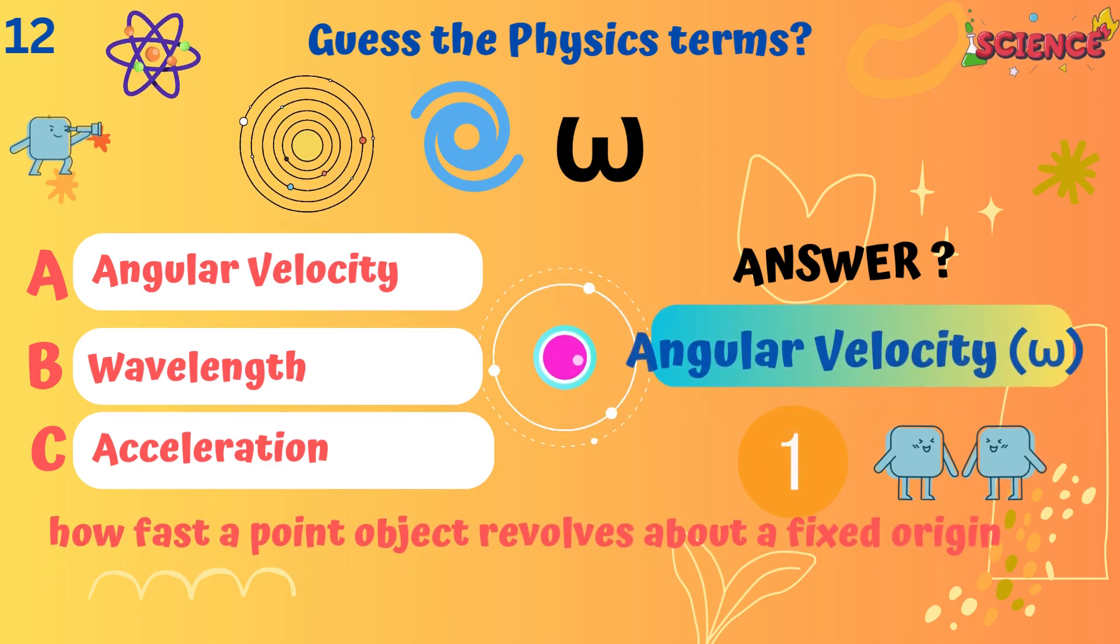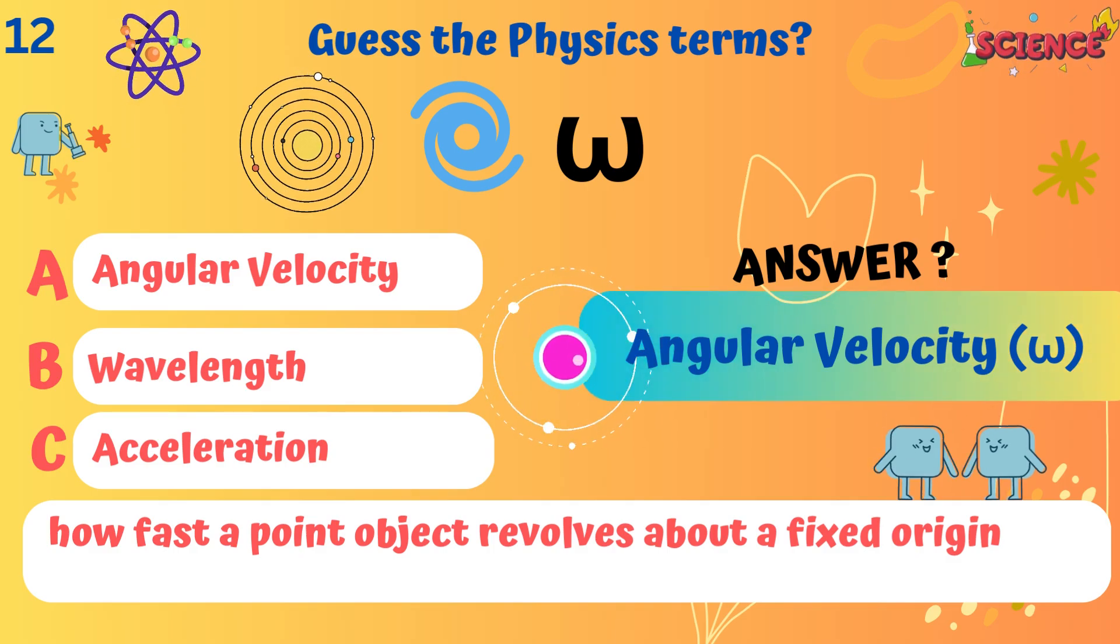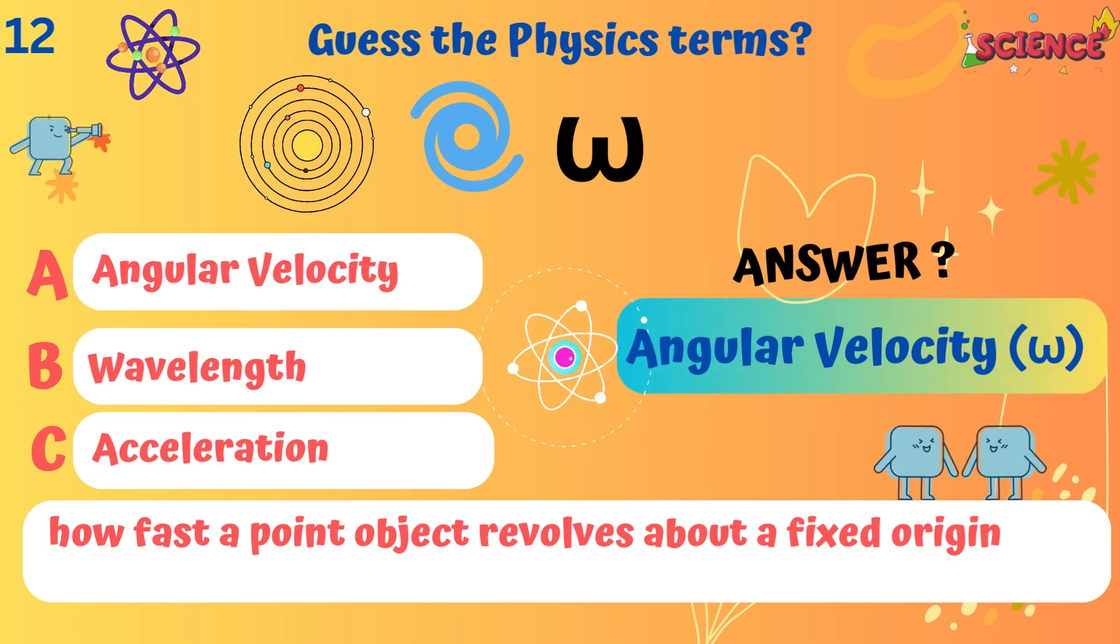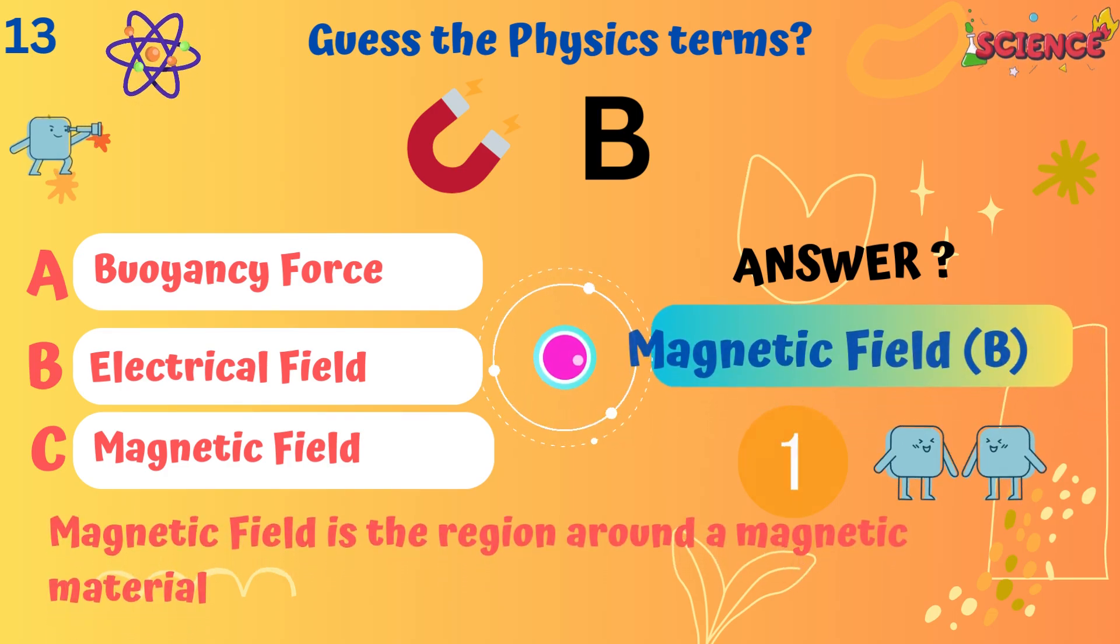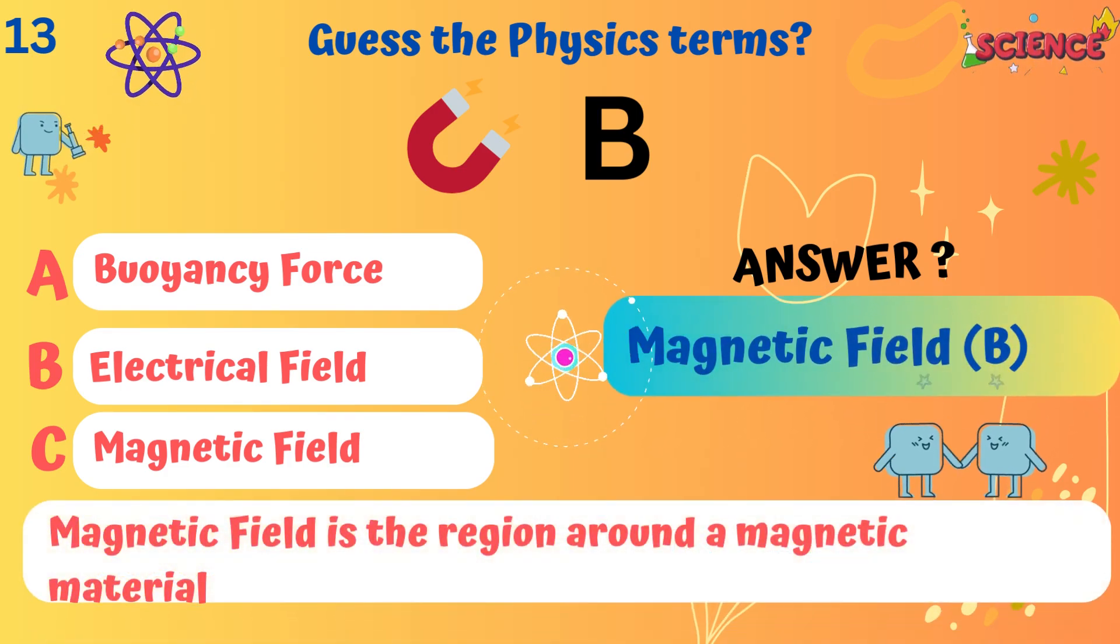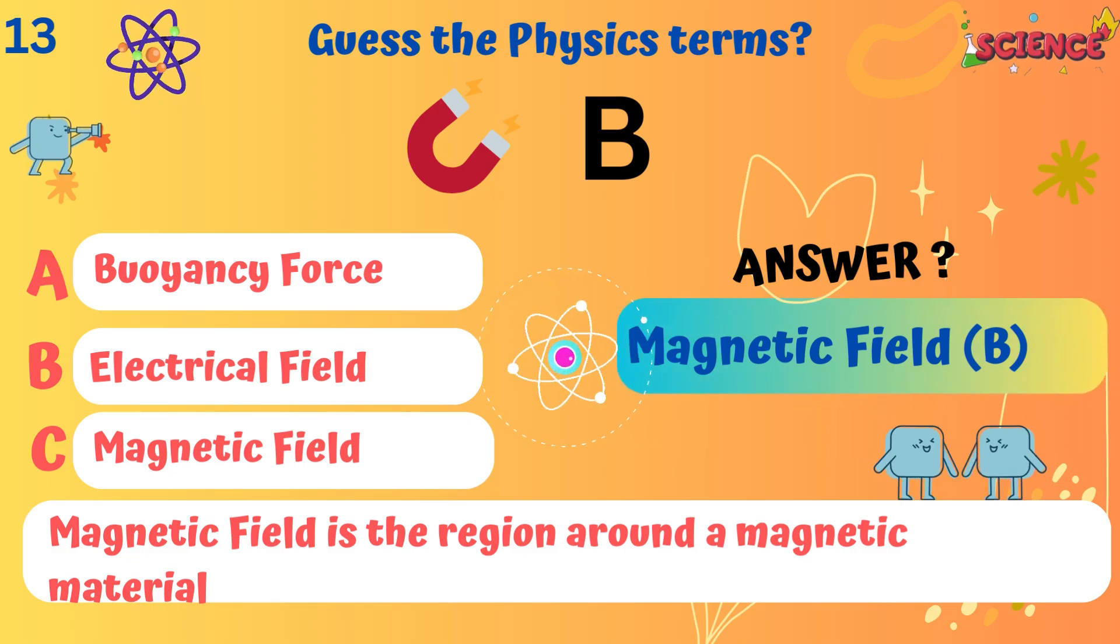Angular velocity. How fast a point object revolves about a fixed origin. Magnetic field. Magnetic field is the region around a magnetic material.